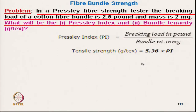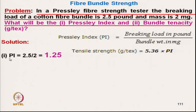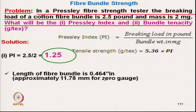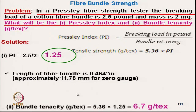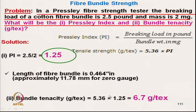What is the Presley index and bundle tenacity in gram per tex? The Presley index is breaking load in pound divided by bundle weight in milligram. To convert the Presley index - for zero gauge length, the conversion value is 5.36. The Presley index is 2.5 divided by 2, giving 1.25. The length of the fibre bundle in Presley index for zero gauge length is approximately 11.78 mm, roughly 12 mm gauge length. Multiplying by 5.36 for zero gauge length gives 6.7 gram per tex for the cotton.